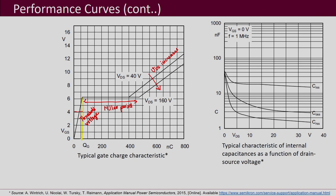In the region before the Miller plateau, Q_G is increasing and gate-to-source voltage is also increasing. Further, what happens is that the voltage does not increase but the charge continues to increase — this is associated with C_GD, or you can also call it Q_GD. After the Miller period is over, the gate-to-source voltage increases further and settles to whatever gate voltage is provided by the driver, and at that time the Q_G charge keeps on increasing.